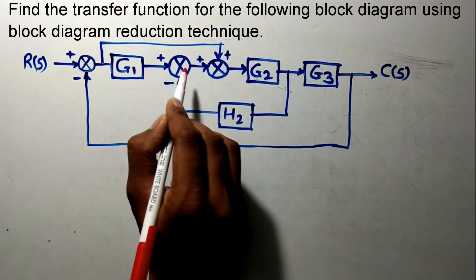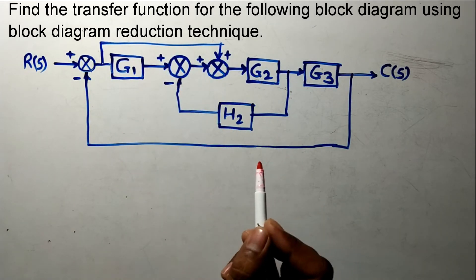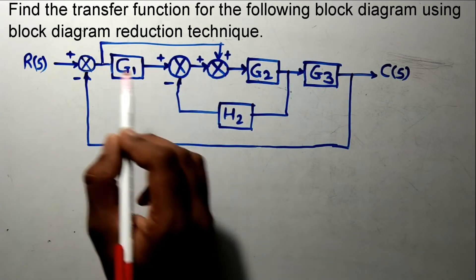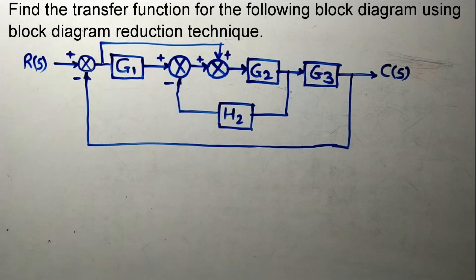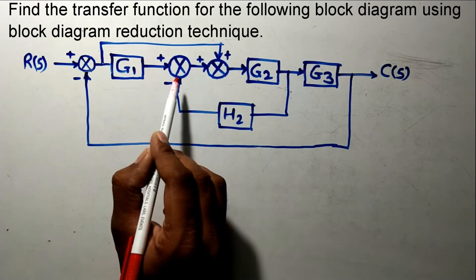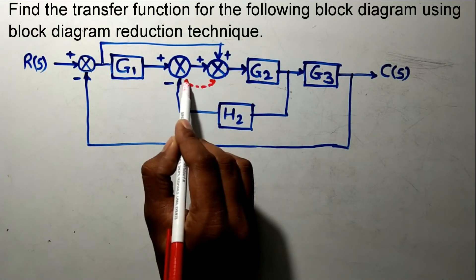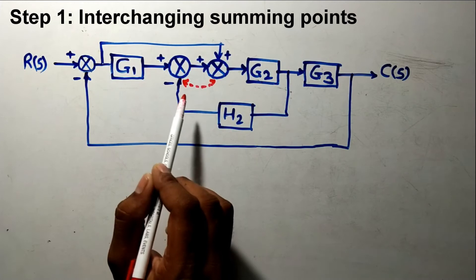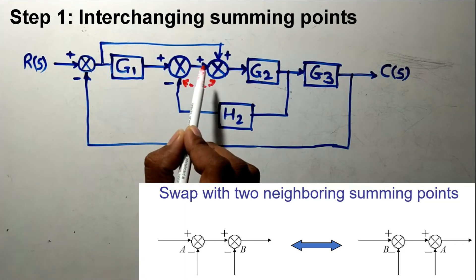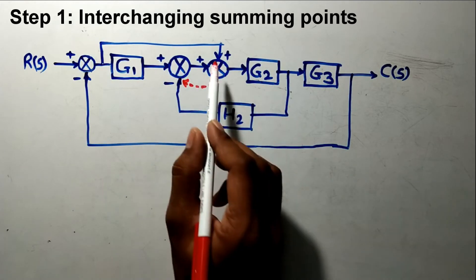See that these two summing points are consecutive to each other and we can interchange them, but before applying the rule, first check whether by interchanging this we will have a simplified block diagram or not. After interchanging, you will definitely have the simplified diagram. So our step number one is interchanging the summing point. After interchanging, note that the sign of the summing point will not change and the connection will not change.